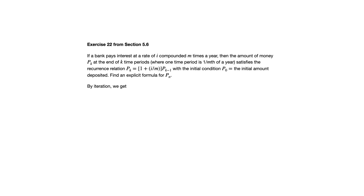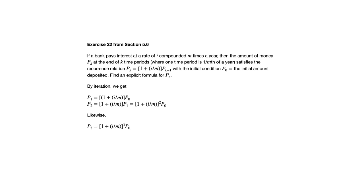We'll do something very similar to the previous example. P sub 1 is obtained by multiplying that factor by P sub 0, the initial amount deposited. P sub 2, we'd multiply by that factor again — notice that results in the exponent increasing by 1. Likewise, P sub 3 would have that factor to the third power times the initial deposited amount.